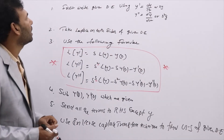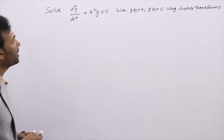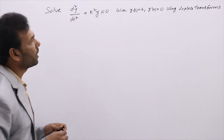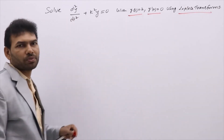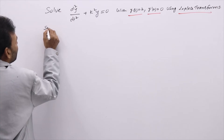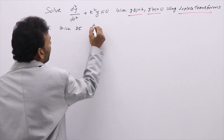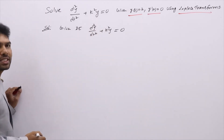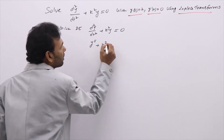We will discuss one problem to understand this clearly. Solve d²y/dt² + K²y = 0, given initial conditions y(0) = 2 and y'(0) = 0, using Laplace transforms. The given DE can be rewritten as y'' + K²y = 0.